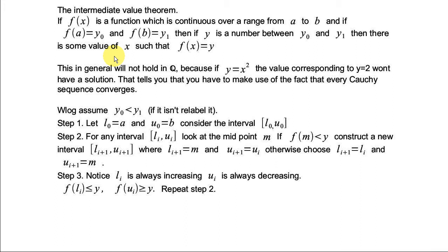So you also know about using Cauchy sequences. Well, yeah, you can do it using that. Because if you notice, in general this is not going to hold in Q, because if you look at the case of y equals x squared, there's no value corresponding to y equals 2 in Q. It's got no solution in Q. So that tells you that you're going to have to use the properties of r, in the particular property is that every Cauchy sequence converges.